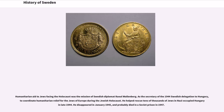Humanitarian aid to Jews facing the Holocaust was the mission of Swedish diplomat Raoul Wallenberg. As the secretary of the 1944 Swedish delegation to Hungary, he coordinated humanitarian relief for the Jews of Europe during the Holocaust. He helped rescue tens of thousands of Jews in Nazi-occupied Hungary in late 1944. He disappeared in January 1945, and probably died in a Soviet prison in 1947.